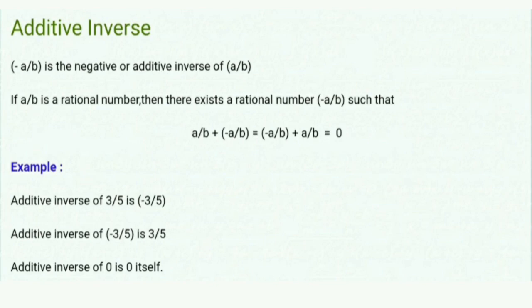Additive inverse. What is additive inverse? If you add a number with another number and the result is 0, then the other number is the additive inverse. For example, 3 upon 5 and minus 3 upon 5 are additive inverses. The additive inverse of 0 is 0 itself.